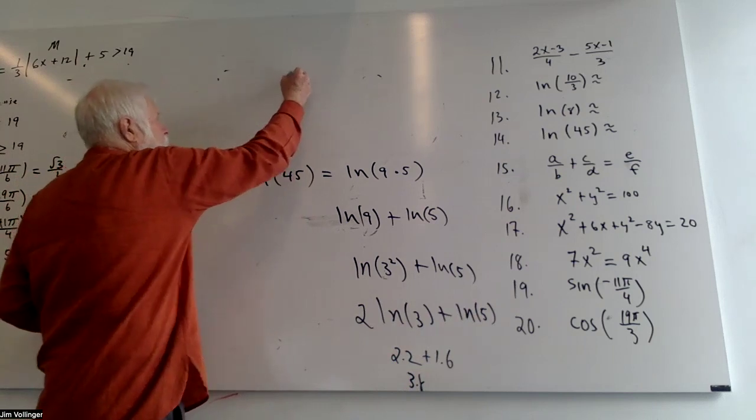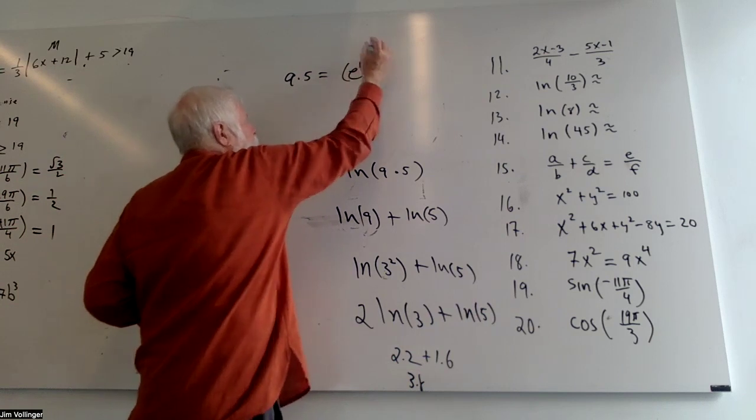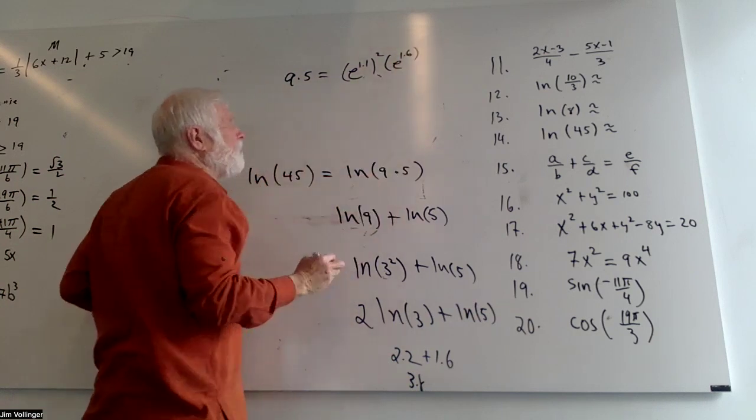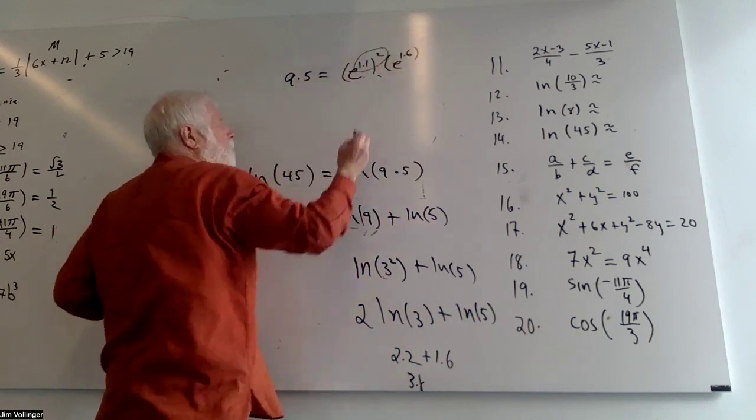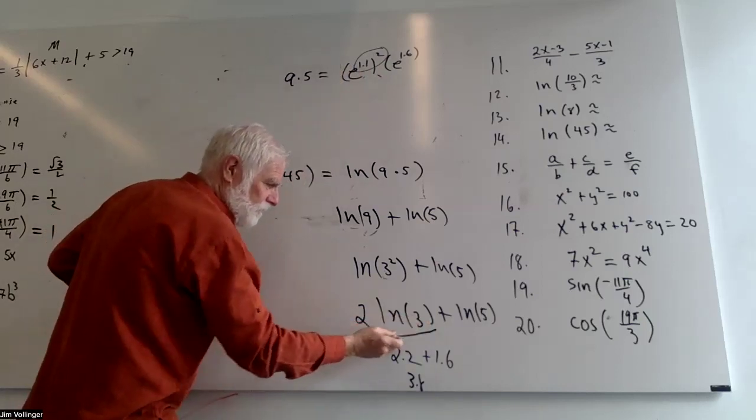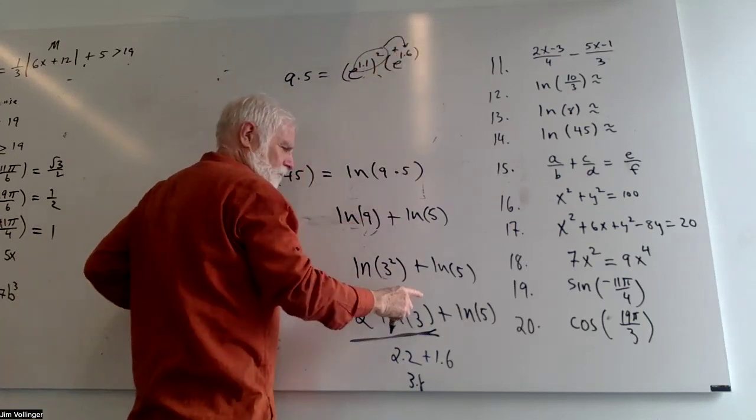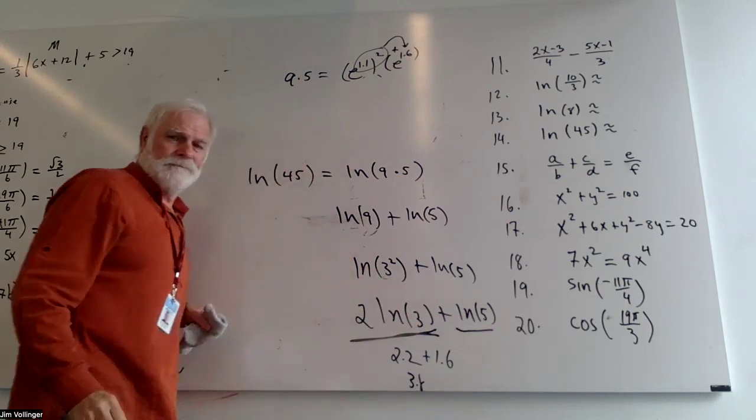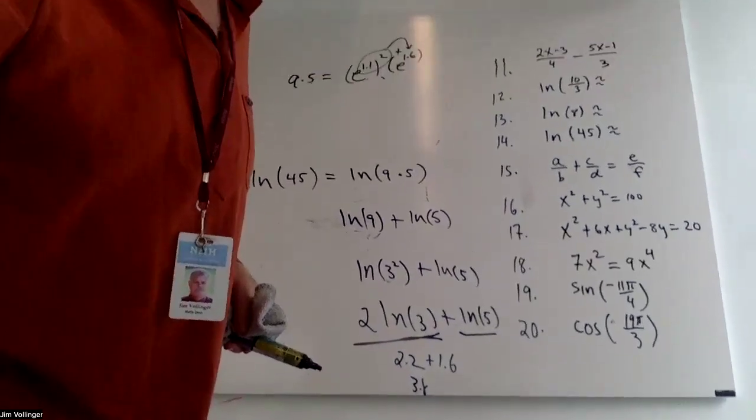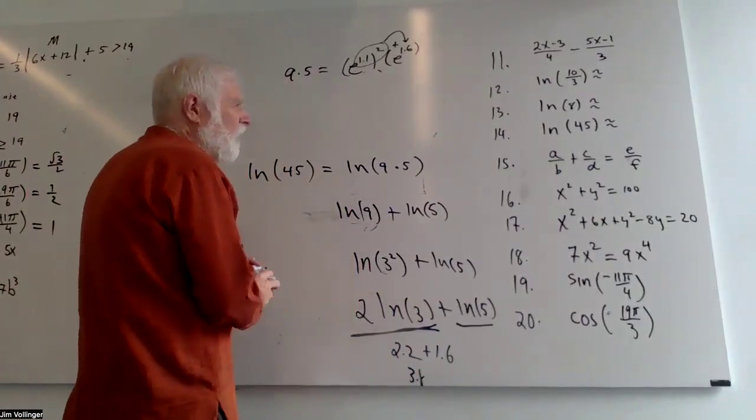Now, 45. We said it was 9 times 5, which is E to the 1.1, which is 3 squared, times E to the 1.6. So what are we doing? We're doubling 1.1, which is doubling the LN of 3. Well, there it is. Doubling the LN of 3. And then we're adding that exponent, 1.6. Well, there it is. That's the organic approach. Sorry, I didn't capture everything. Well, I guess I did capture the 3.8 for practice.